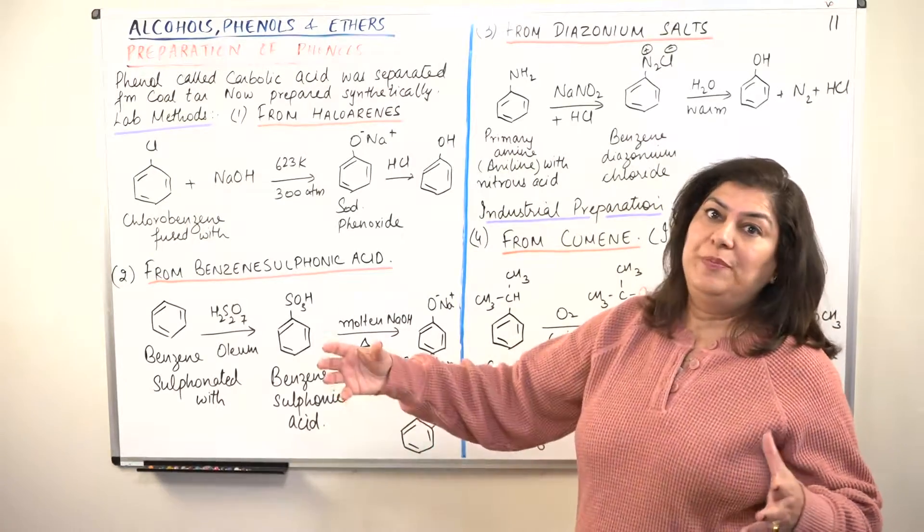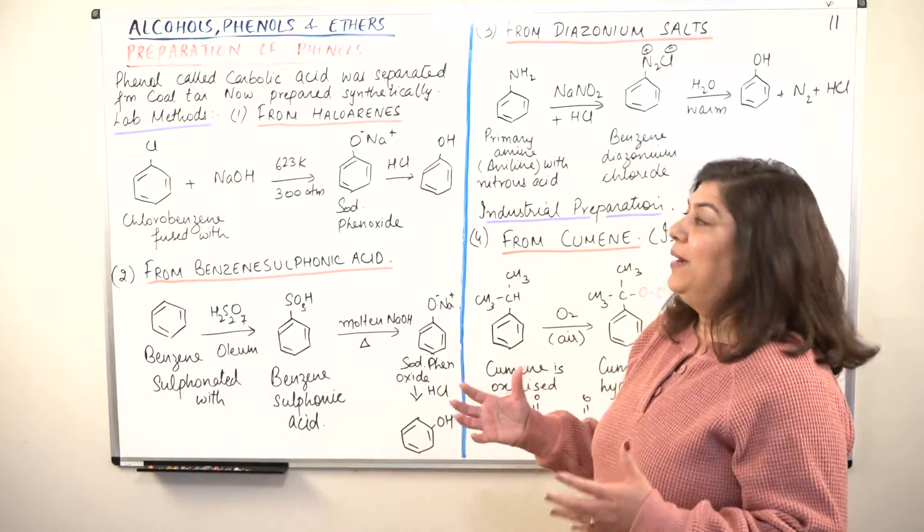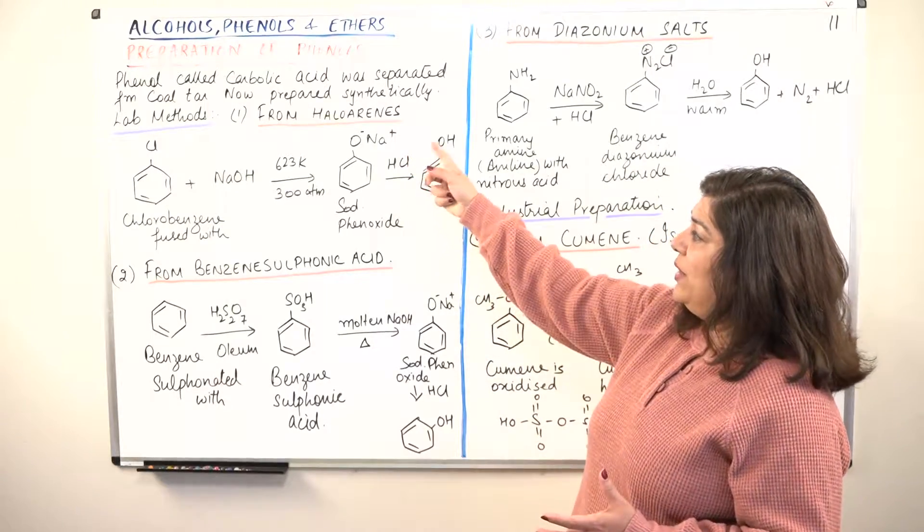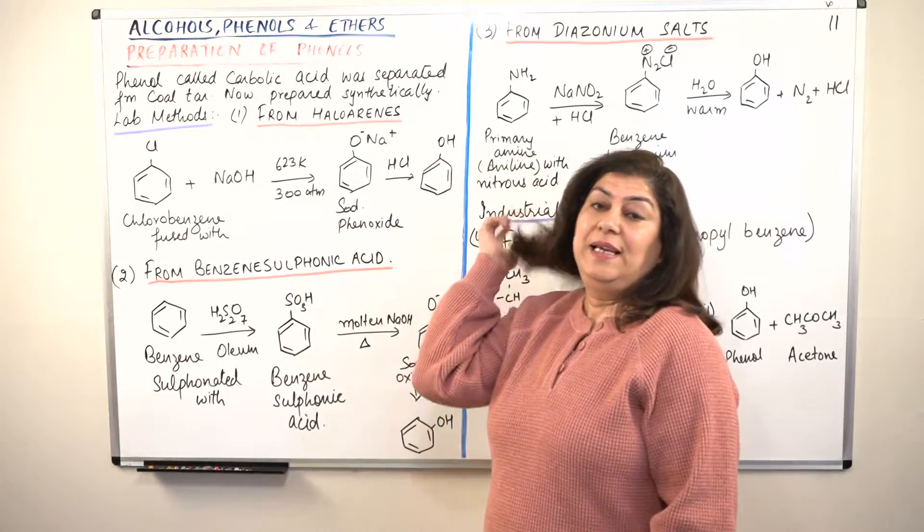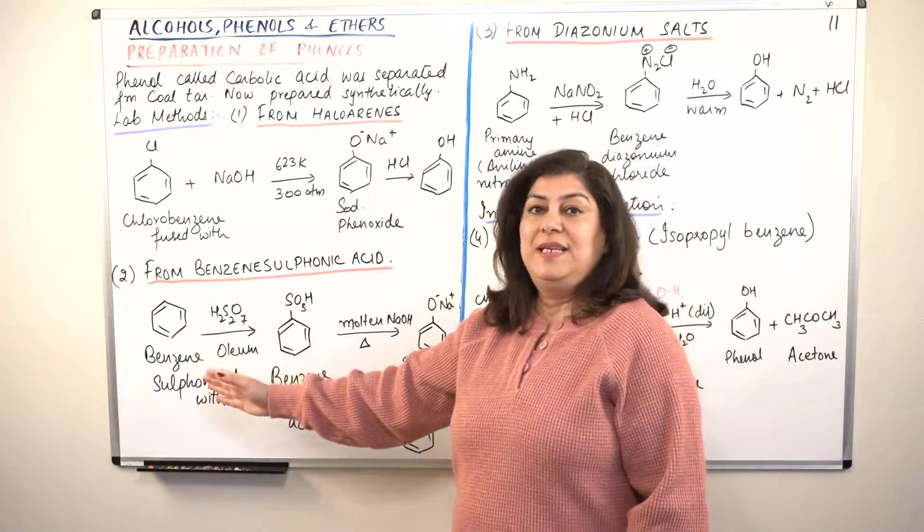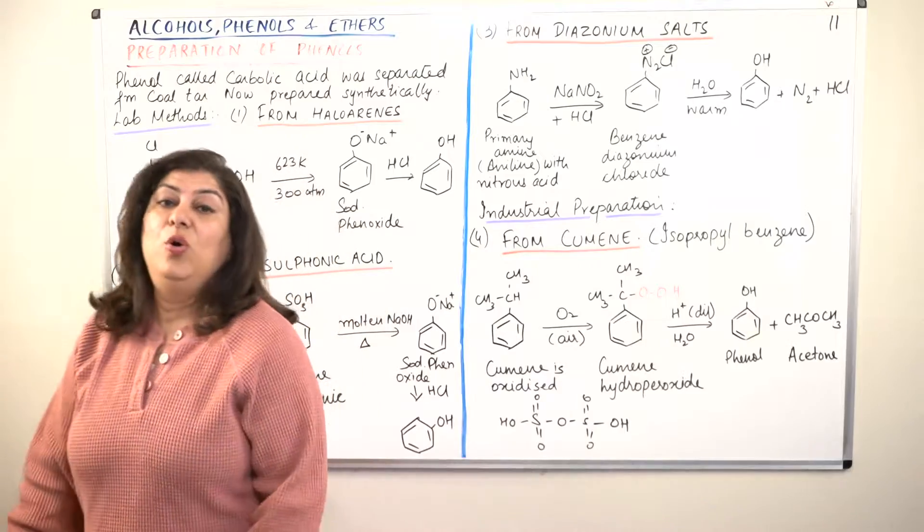So these are two methods of preparation of phenol. These are both laboratory methods. You do not commercially produce phenol by these methods. The first was from haloarenes and the second was from benzene sulfonic acid, which is basically prepared from benzene by treating it with oleum.